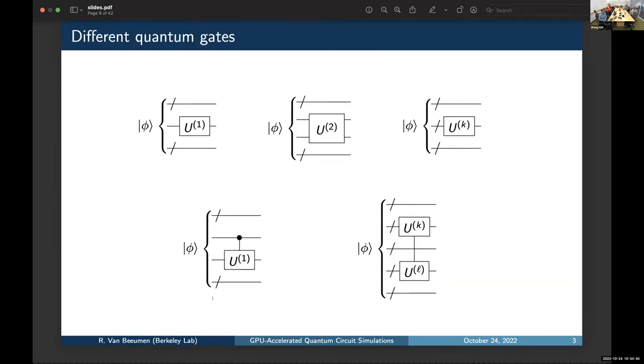So, here is an overview of the different types of quantum gates we are considering. First of all, the one-qubit gates, the two-qubit gates, but also k-qubit gates, so a unitary acting on k-qubits. Then we have the controlled gates, for example, a controlled one-gate. And then these gates which are acting on different parts of the qubits, for example, the swap gate not on nearest neighbor qubits.